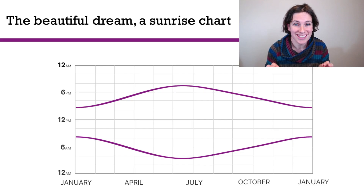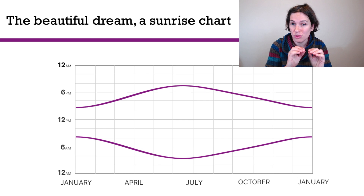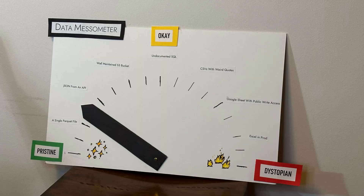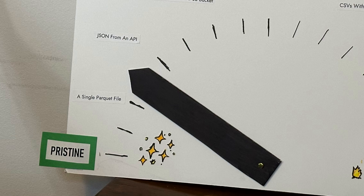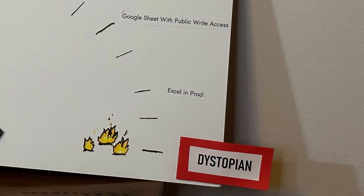This whole talk is just about me trying to make a sunrise-sunset chart for an arbitrary location, so it shows over the course of a year what times the sunrise and sunset are. This talk is going to be about a lot of messy data, so we're going to use something I like to call the data massometer. The data massometer indicates how messy data can be, from beautiful pristine sparkling to okay, then all the way to dumpster fire dystopian.